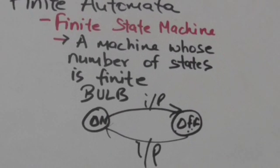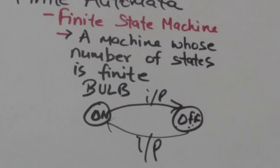For example, a bulb. A bulb has only two states - it can either be in on state or in off state. So it has finite number of states, so bulb is a finite state machine.